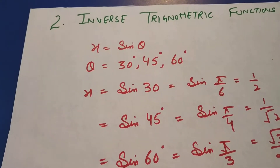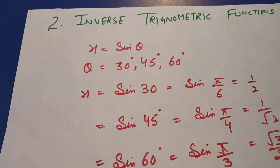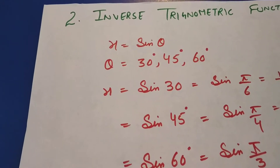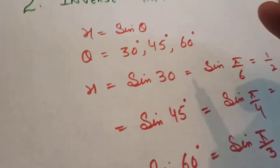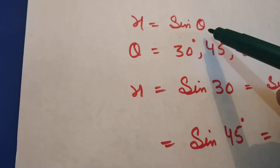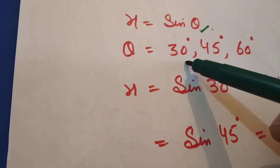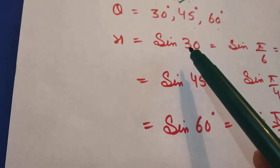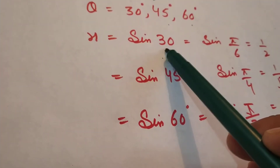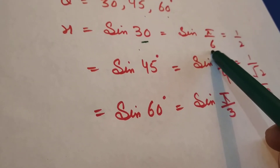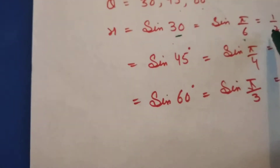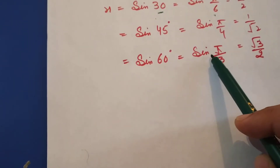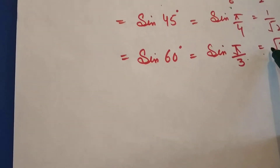Students, today we will be starting your second chapter, second unit, which is inverse trigonometric functions. Now you have studied about trigonometric functions in detail in class 11th. In trigonometric functions, x is equal to sin theta, and theta can have any value: 30 degrees, 45 degrees, 60 degrees, 90 degrees. Sin 30 degrees, or sin(π/6), equals 1/2. Sin 45 degrees, or sin(π/4), equals 1/√2. Sin 60 degrees, or sin(π/3), equals √3/2.